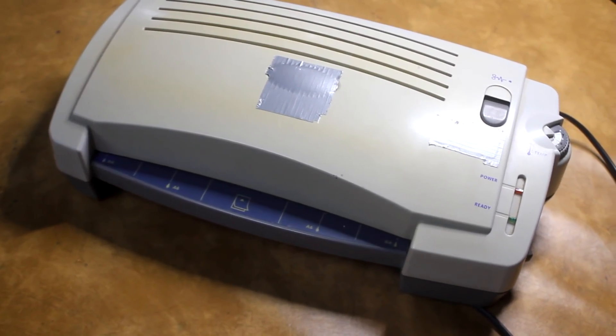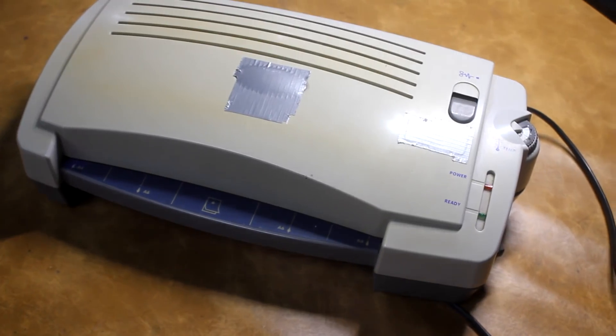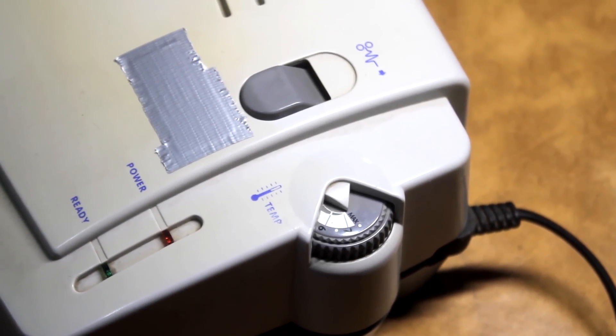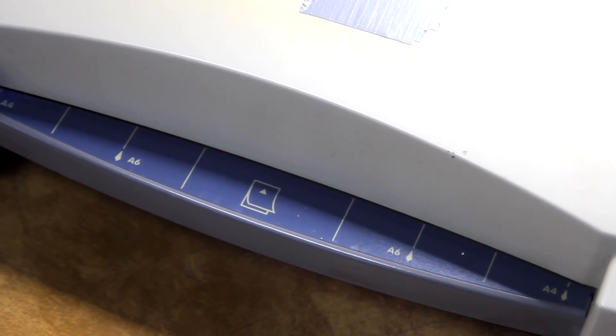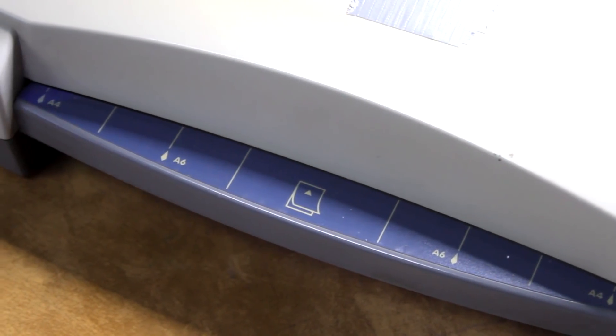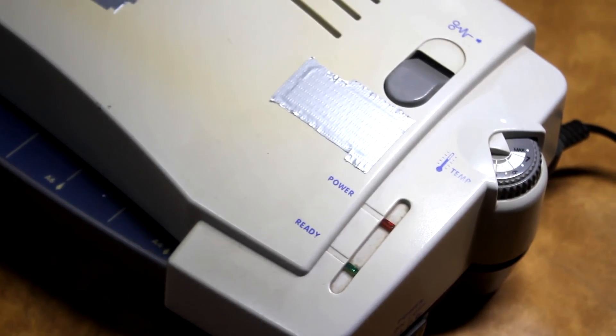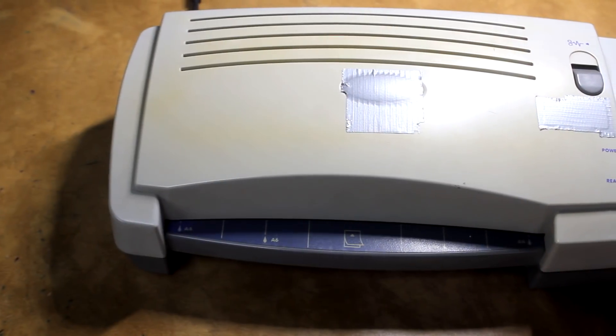The most common household laminator can completely replace the iron. The advantage is that when using a laminator, the transfer time of the drawing will be reduced to 10 to 20 seconds. It all depends on the size of the board. And no additional effort is required. The laminator will do everything for us.